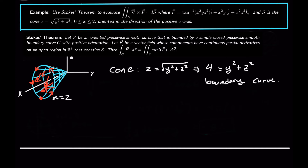Why is that the boundary curve? If we look through that curve, we can pretty much see the entire surface. If I look at this surface from the direction of the normal vector along the x axis, I can see the whole surface and the boundary curve passes around the edge of that surface. So this boundary curve is a circle of radius 2 in the plane x equals 2.